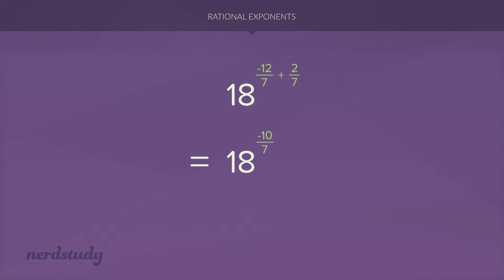Well, we have already learned what to do with negative exponents. 18 to the exponent negative 10 over 7 is going to be the exact same thing as 1 over 18 to the exponent 10 over 7. Remember, we can just do 1 over and take that entire power dropping that negative sign.